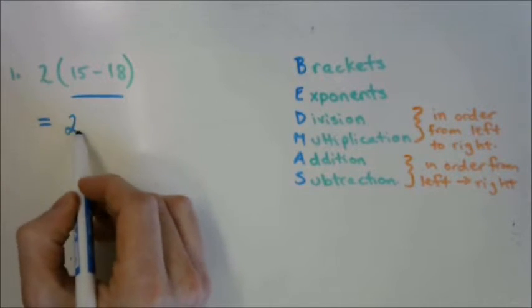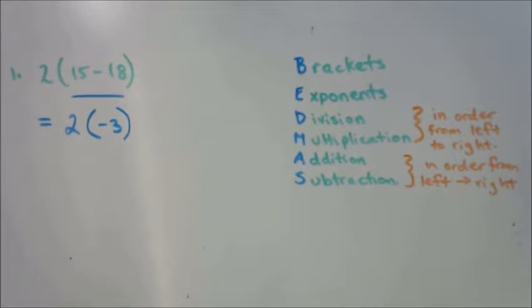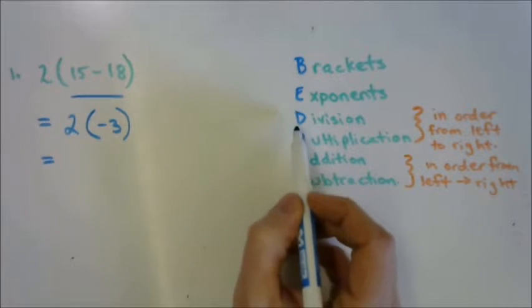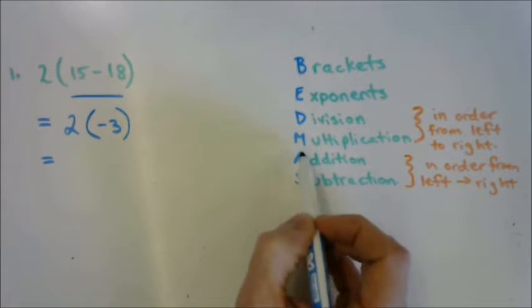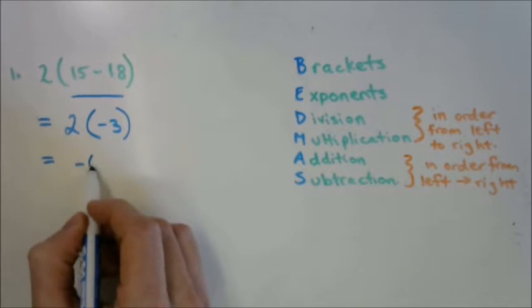So we're going to rewrite our problem. It's going to be 2 times, as you said, negative 3. Now we come down and we don't have any exponents. We don't have division. We simply have multiplication. 2 times 3 with one negative factor. Negative 6.